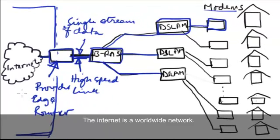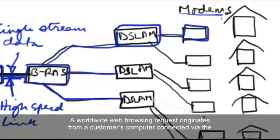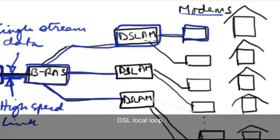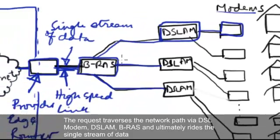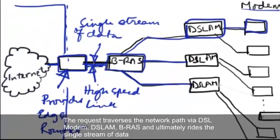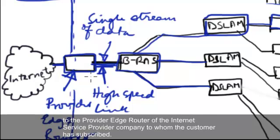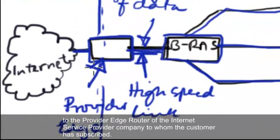The internet is a worldwide network. A worldwide web browsing request originates from a customer's computer connected via the DSL local loop. The request traverses the network path via DSL modem, the DSLAM, the Brass, and ultimately writes the single stream of data to the provider edge router of the internet service provider company to whom the customer has subscribed.